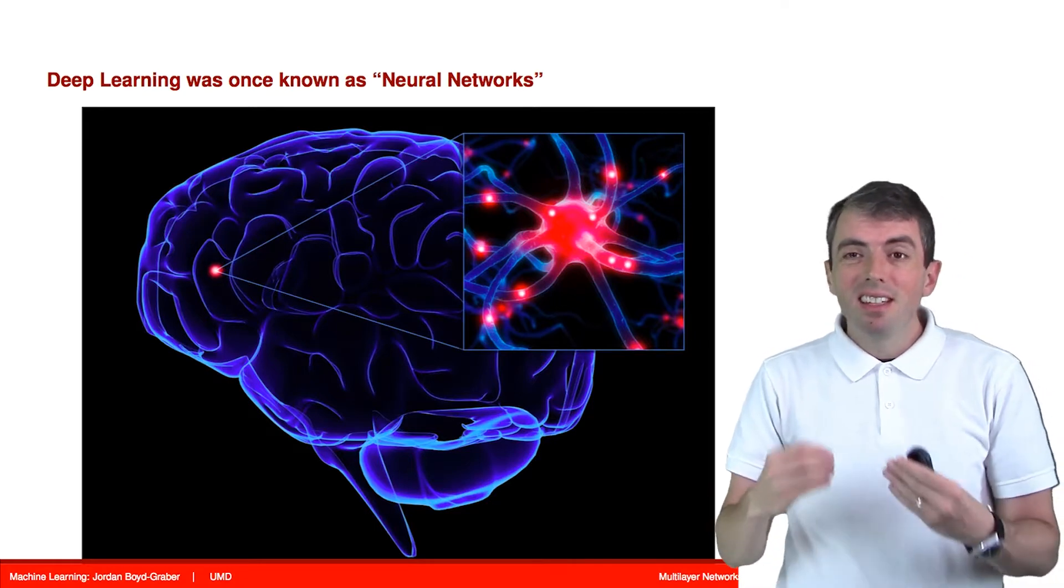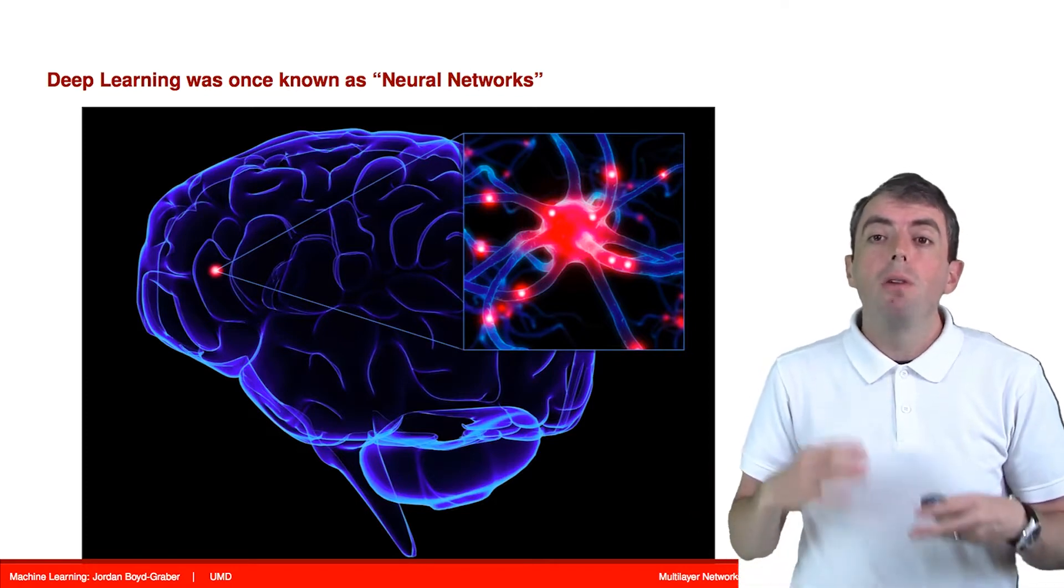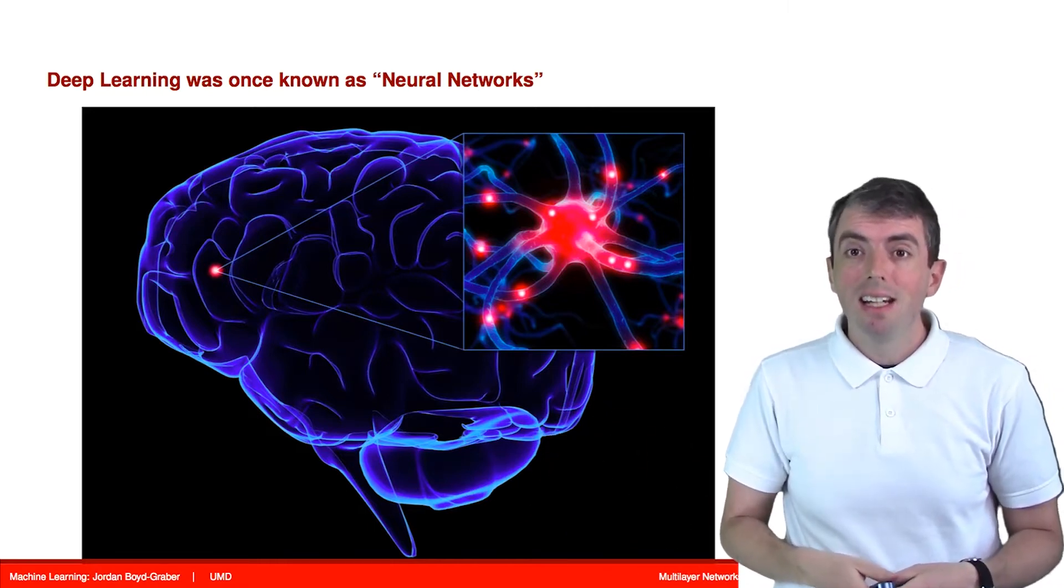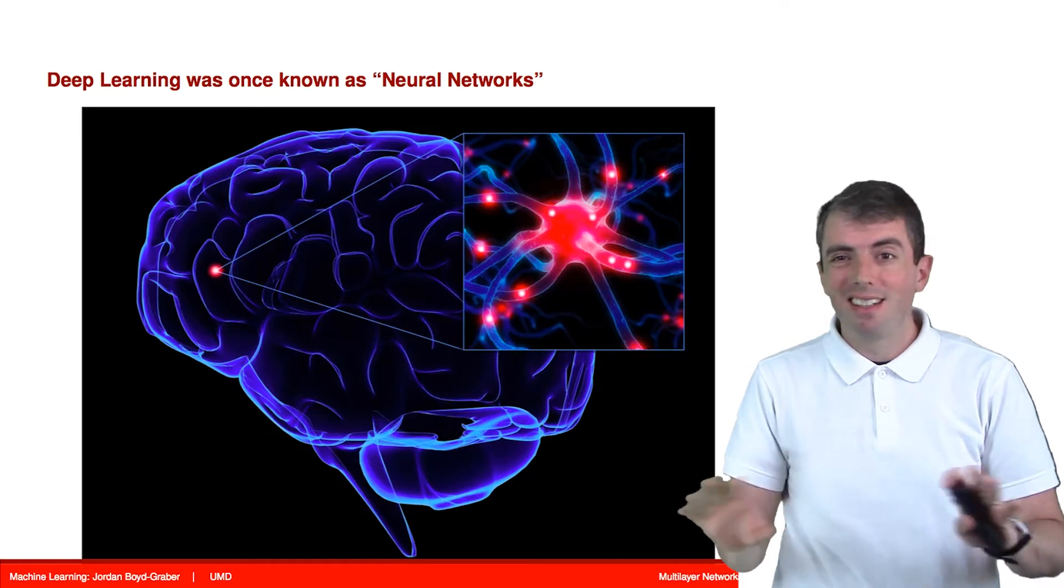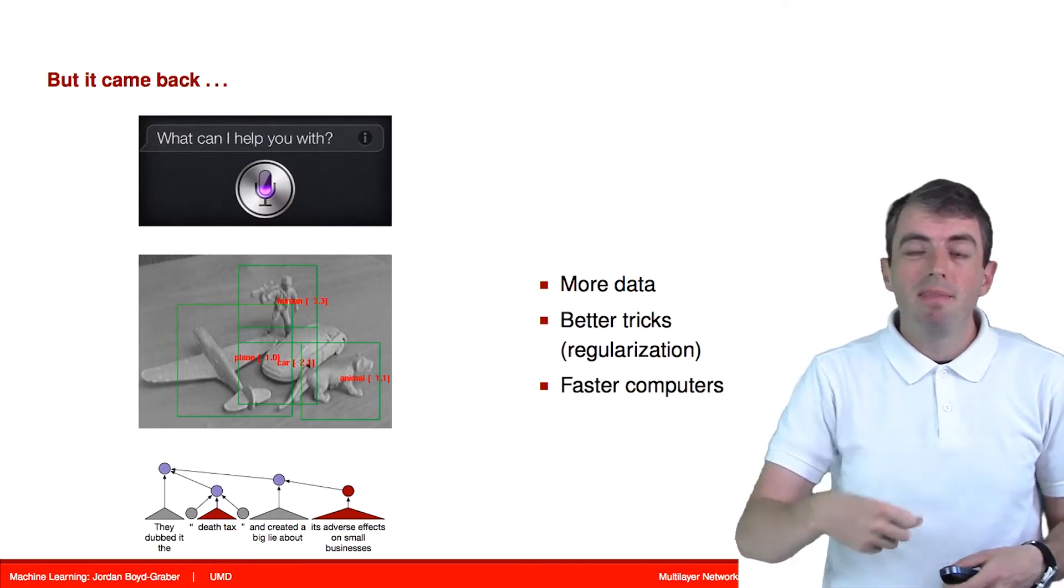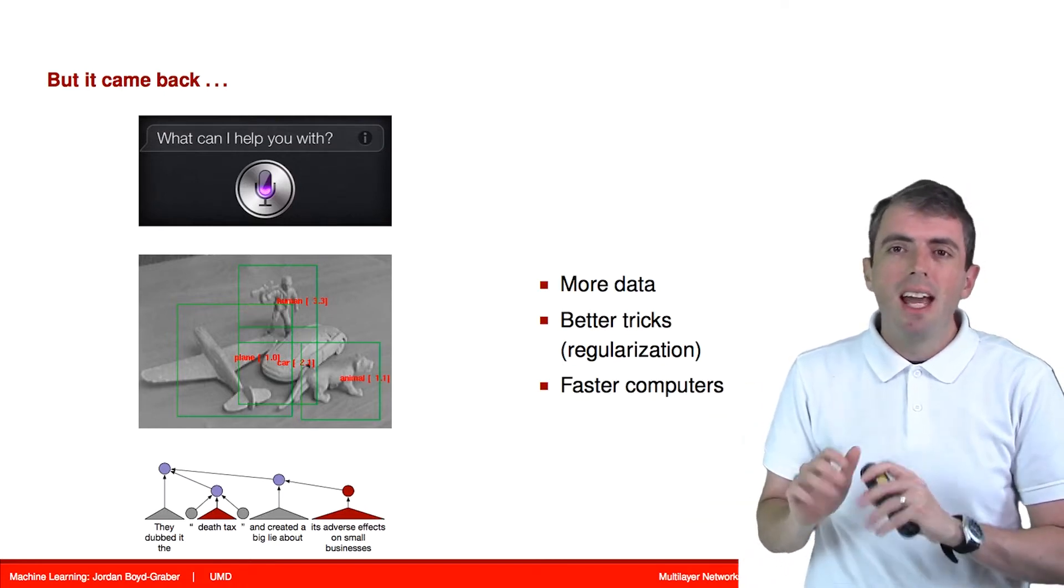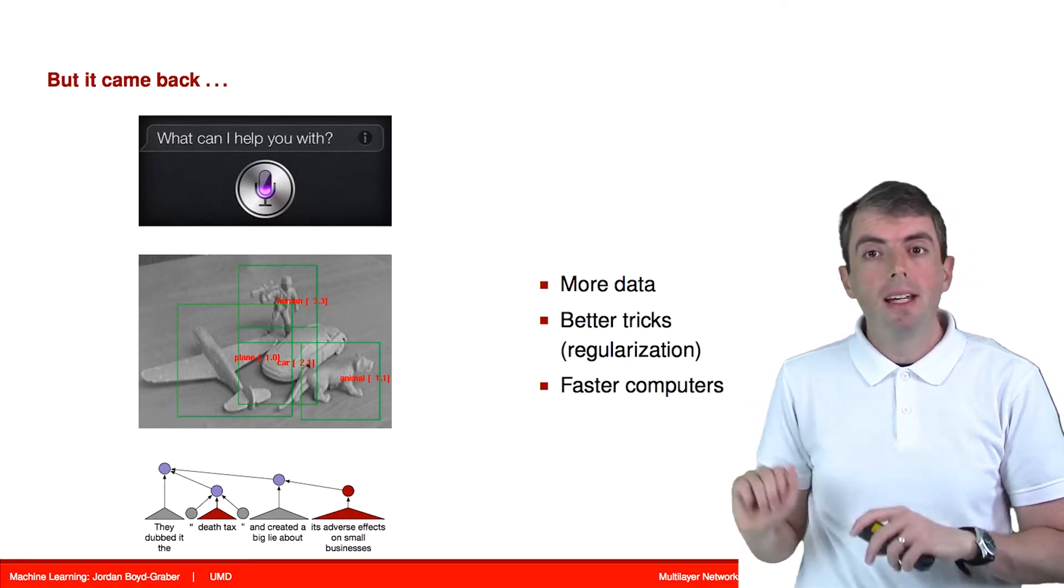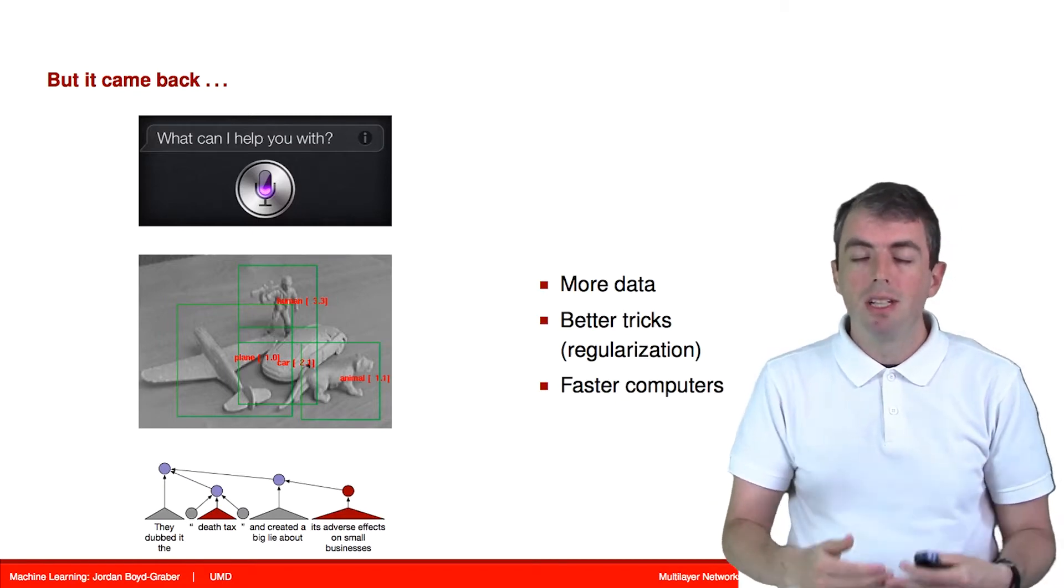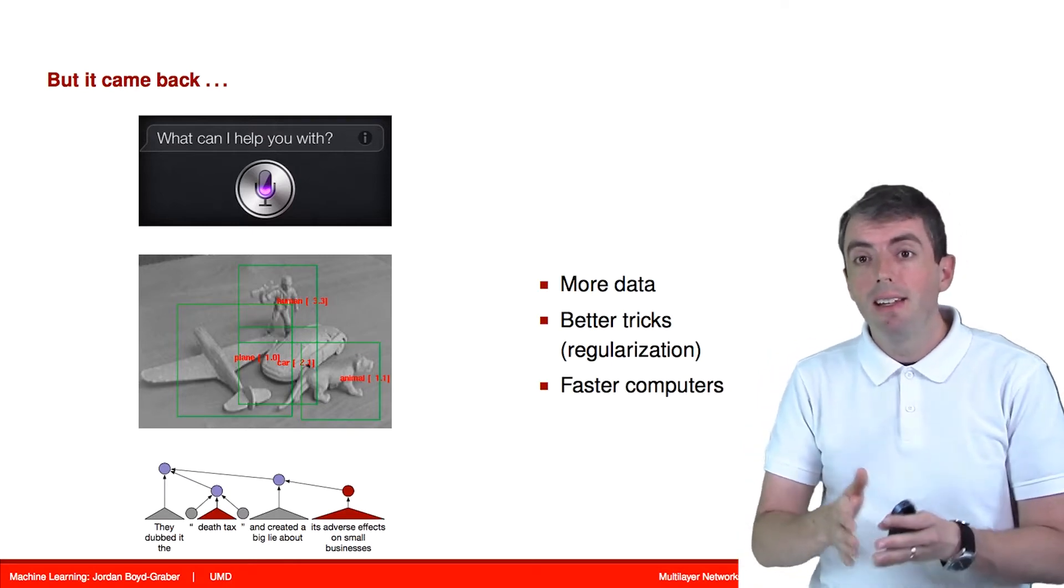But this connection to biology can be sometimes overdone a little bit, so we're not going to dwell on it particularly. But if you hear the term neural networks, think about multi-layer networks that we're going to be talking about and try to avoid too closely the connection to biology. Neural networks were once very popular, used for applications from speech recognition to image recognition. Then for about a decade or two, they went away. Other techniques like probabilistic methods and support vector machines became more popular. But they came back in the last ten years or so.